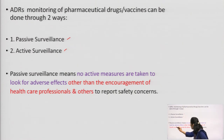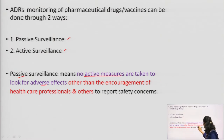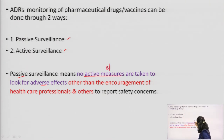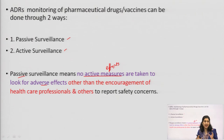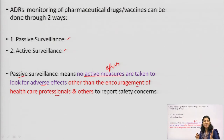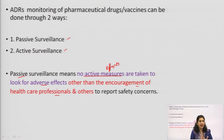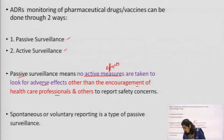Passive surveillance — what does 'passive' mean? No active measures are being taken to look for adverse effects other than the encouragement of healthcare professionals and others to report safety concerns. No active efforts are made to collect data on adverse effects. It depends on doctors — doctors may or may not report voluntarily if a harmful effect is observed in a patient due to a medicine. So spontaneous or voluntary reporting is a type of passive surveillance.